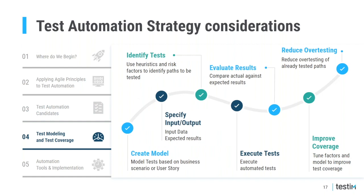Let's look into test modeling and test coverage. A model can be built in three ways: an event-based model based on GUI events, a state-based model based on GUI states, and a domain model based on the functionality of the application. In model-based test automation, you create a model of your application, specify inputs, identify the list of paths that need testing based on business scenarios or events, and may apply heuristics and risk factors to arrive at an optimal test list.